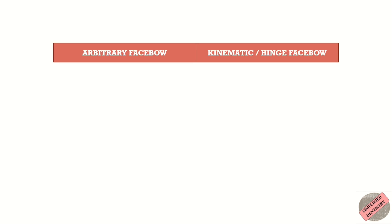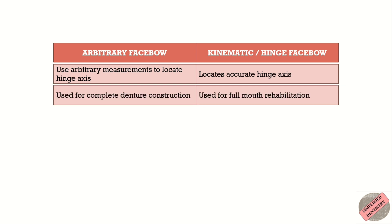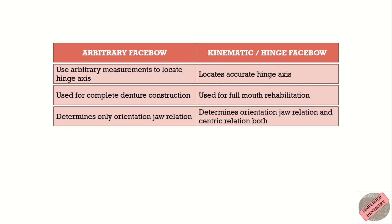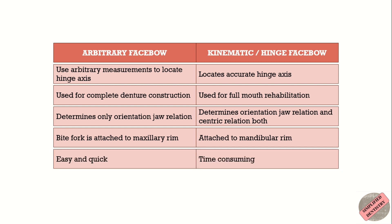The arbitrary face bow uses arbitrary measurements to locate the hinge axis, whereas the kinematic face bow locates the accurate hinge axis. The arbitrary face bow is used for complete denture constructions, whereas the kinematic face bow is used for full mouth rehabilitation. The arbitrary face bow determines only orientation jaw relation and centric relation. In the arbitrary face bow, the bite fork is attached to the maxillary rim, whereas in the kinematic face bow, the bite fork is attached to the mandibular rim. Recording with the arbitrary face bow is easy and quick, whereas recording with the kinematic face bow is time consuming.